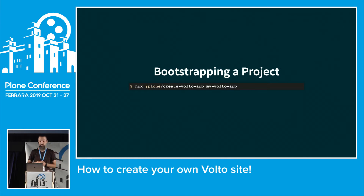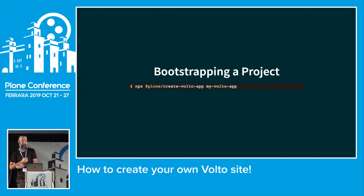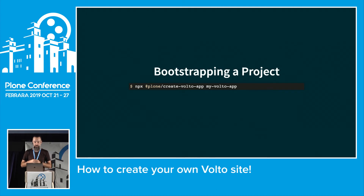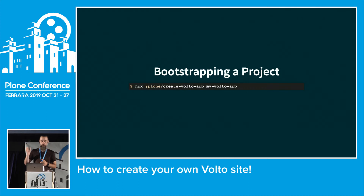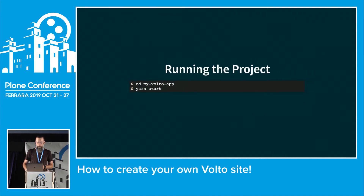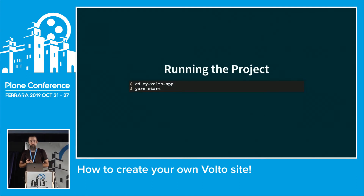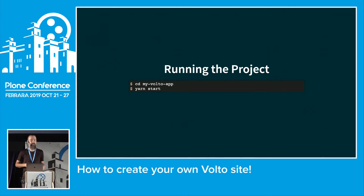You need to install Node.js, and after that you can run npx and then create-volto-app with a name. For this demo we're using my-volto-app but you can use any name you want. It will run and fetch around 3 million npm packages and then you're done.